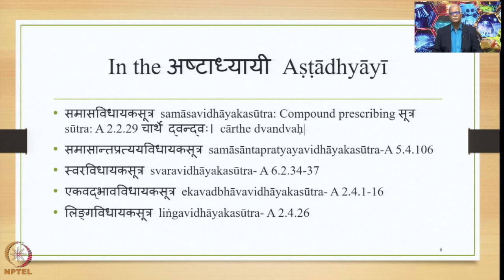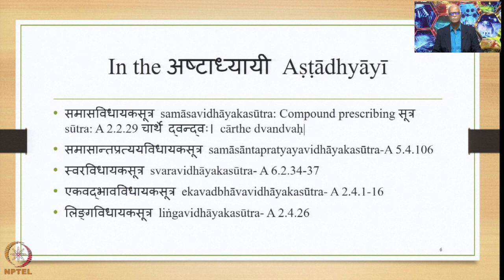The Ekavad Bhava Vidhayaka Sutras stated in the Ashtadhyayi are from 2.4.1 to 2.4.16; amongst them, for the Dvandhva Samasa they are from 2.4.2 to 2.4.16. The Linga Vidhayaka Sutra for the Dvandhva Samasa is 2.4.26. The three features of the Samasa — which apply also to the Dvandhva Samasa — are Aikarthya or Ekarthata, Aikapadya or Ekapadata, and Aikaswarya or Ekaswarata.